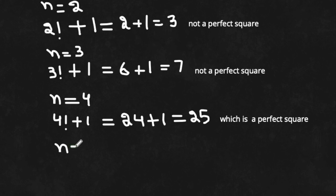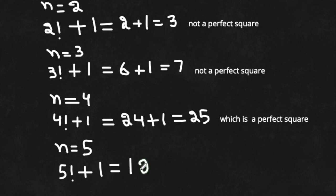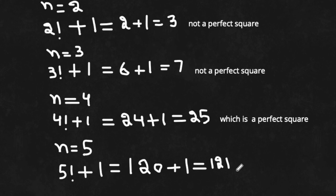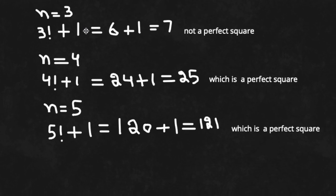We find one value that satisfies this relation. Next, I try with n is equal to 5. 5 factorial plus 1: 5 factorial is 120, plus 1 is 121. So 121 is also a perfect square — 11 squared is 121. So another value which satisfies this relation is n is equal to 5.